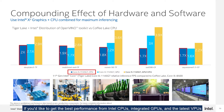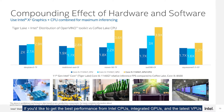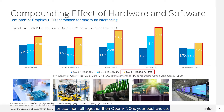If you'd like to get the best performance from Intel's CPUs, integrated GPUs, and latest VPUs by Movidius, or Intel's FPGAs, or use them all together, then OpenVINO is your best choice.